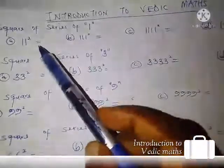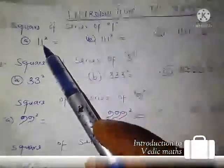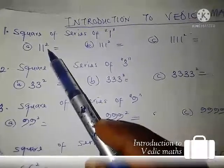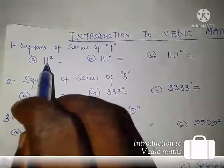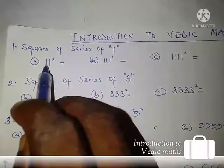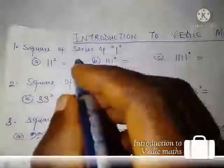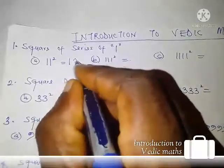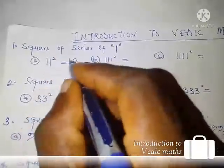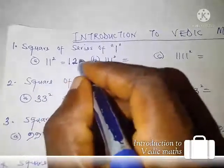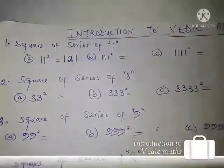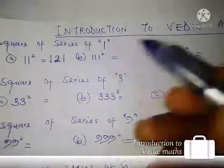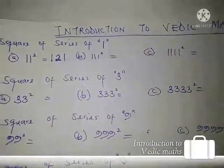Now let's start with the square of a series of ones. Whenever we have a series of ones, starting from 11 squared — what is going to be the answer? It's very simple. Whenever you have a series of ones like this, we have two digits, so you start with one, then go to two, and take it backward, giving you one. So the answer is 121.